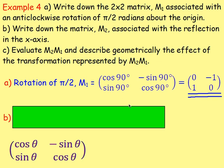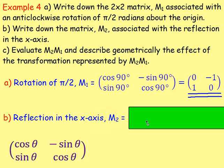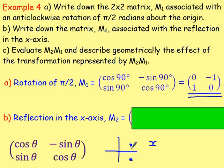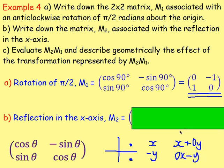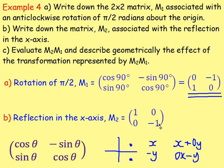Part B: write down the matrix M2 associated with the reflection in the x-axis. For a reflection in the x-axis, (x, y) maps to (x, −y): x stays as it is, y becomes −y. Writing out: x = 1x + 0y, and −y = 0x − 1y. Taking the coefficients gives M2 = [1, 0; 0, −1].